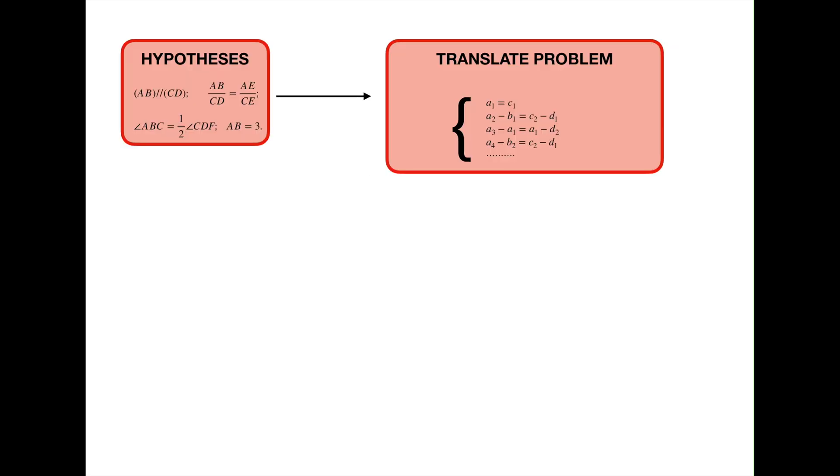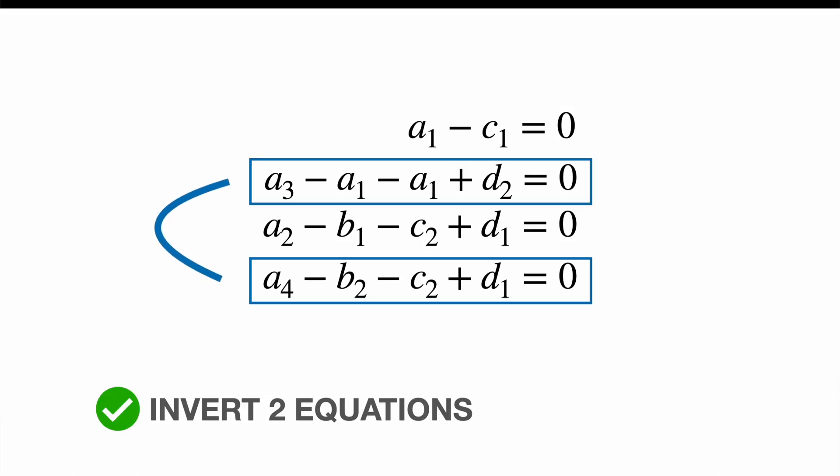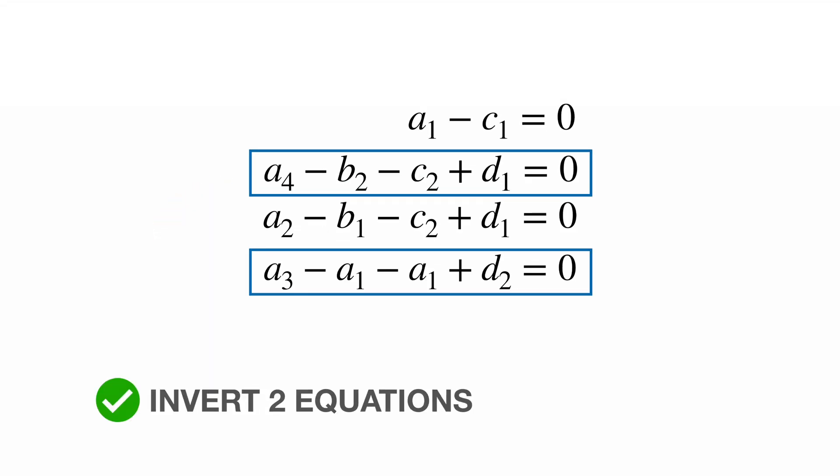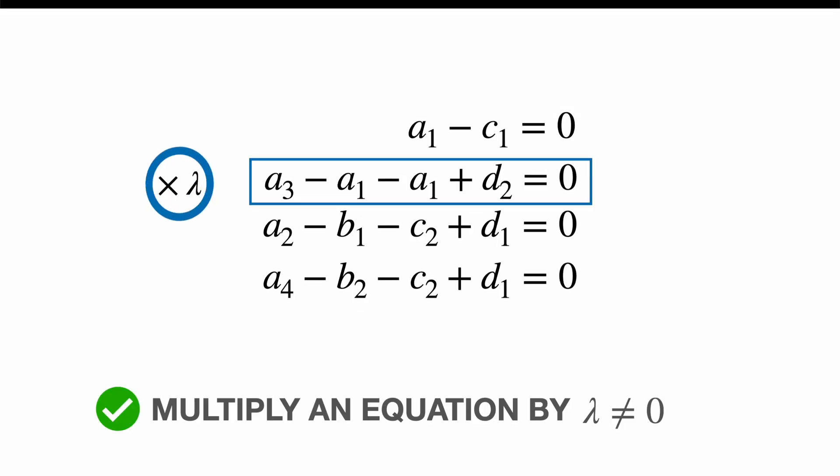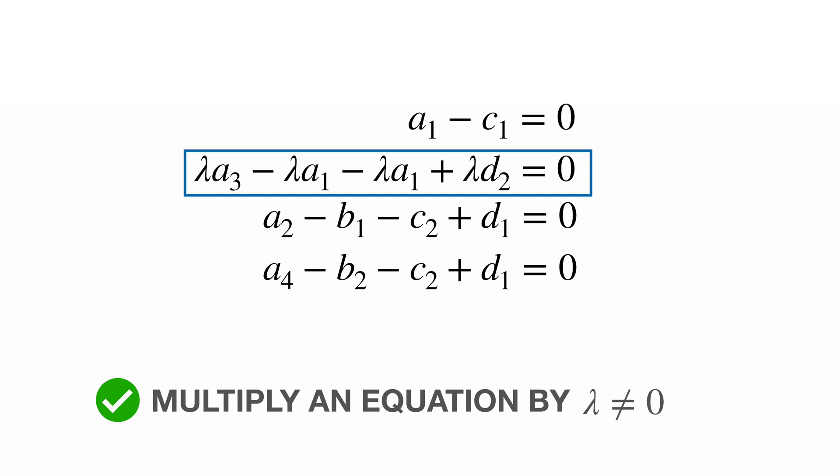Then we translate all the problem hypotheses and we obtain a huge linear system of equations with many variables A1, C1, A2 and so on. Now since each line of the system is equal to zero, the solutions of our system of equations do not change if we perform any of the operations: number one, invert two lines of the system; number two, multiply one line by constant lambda different from zero; and number three, add one line to another one.